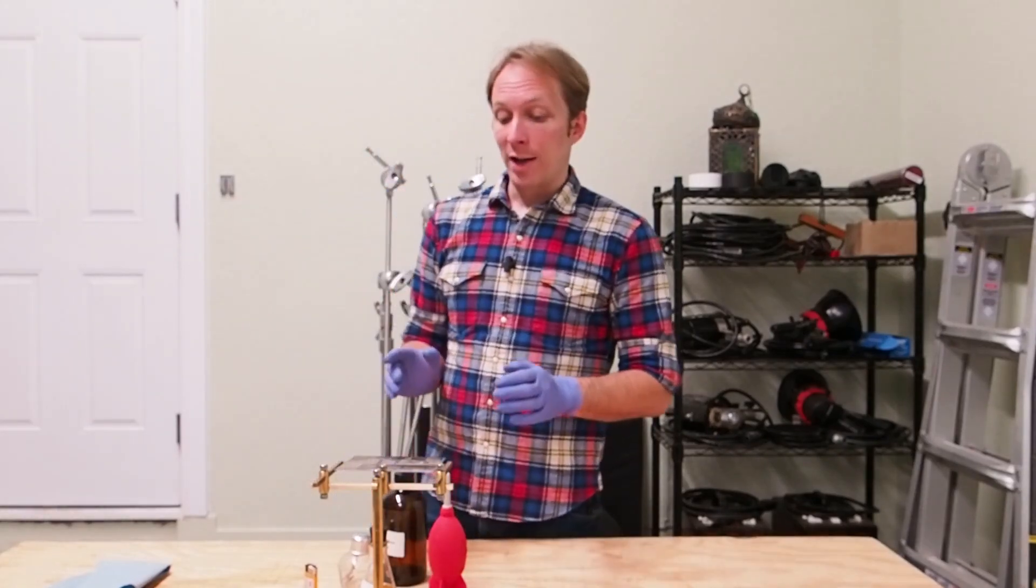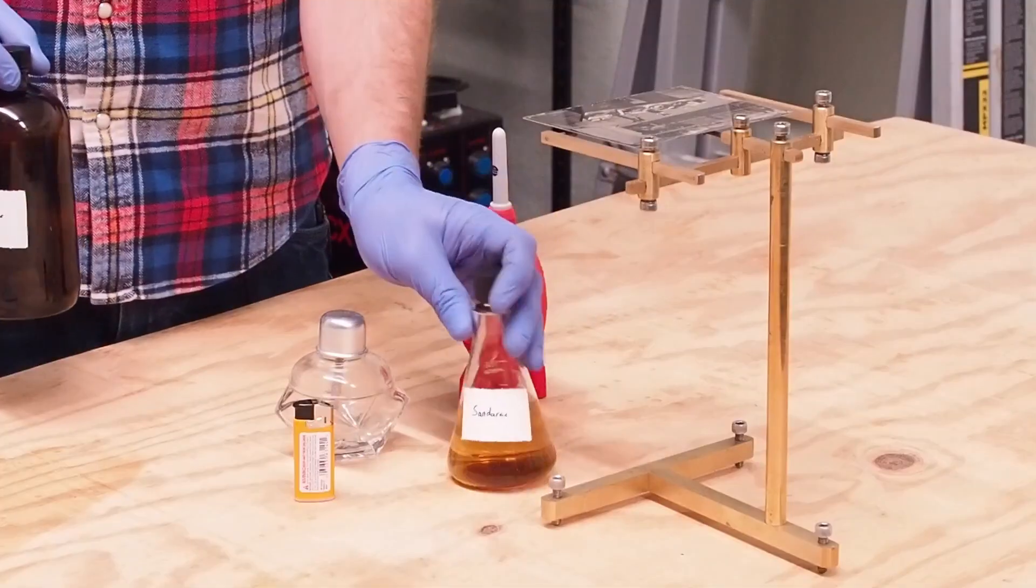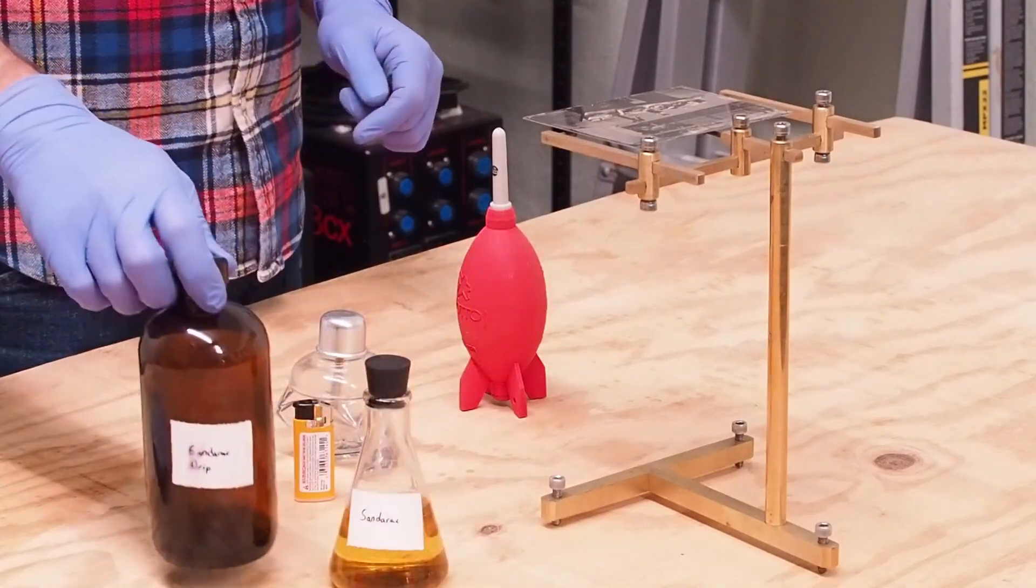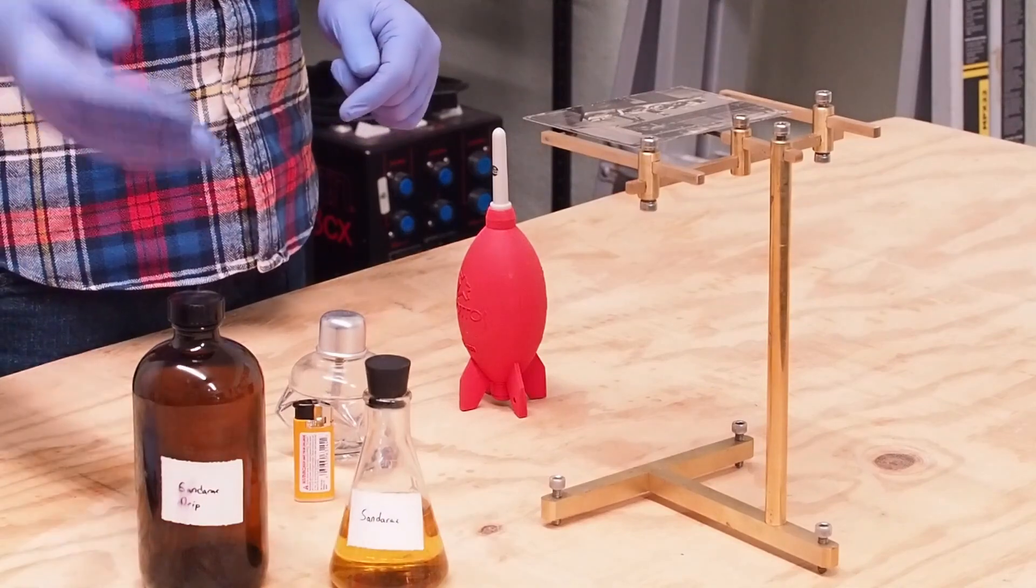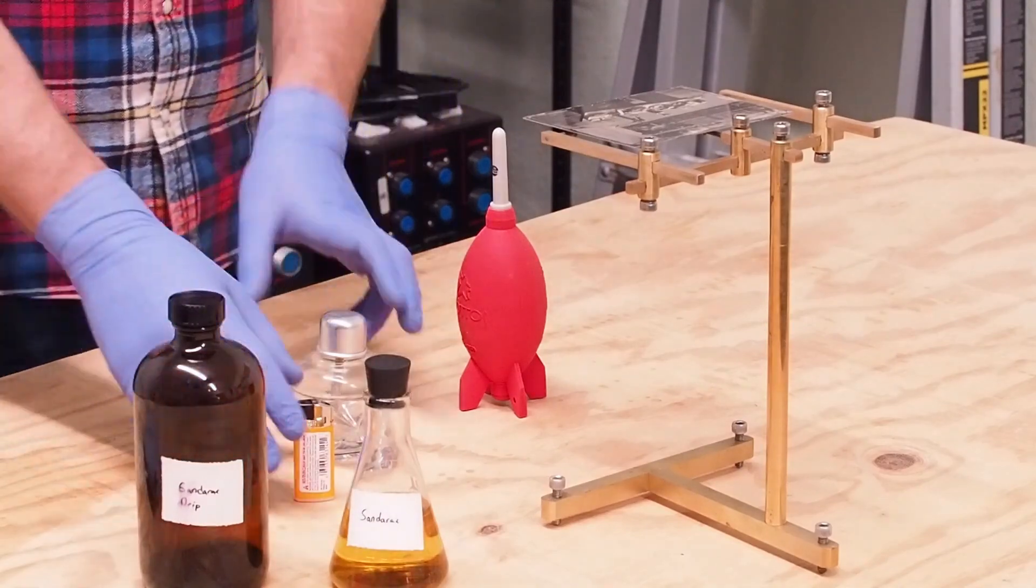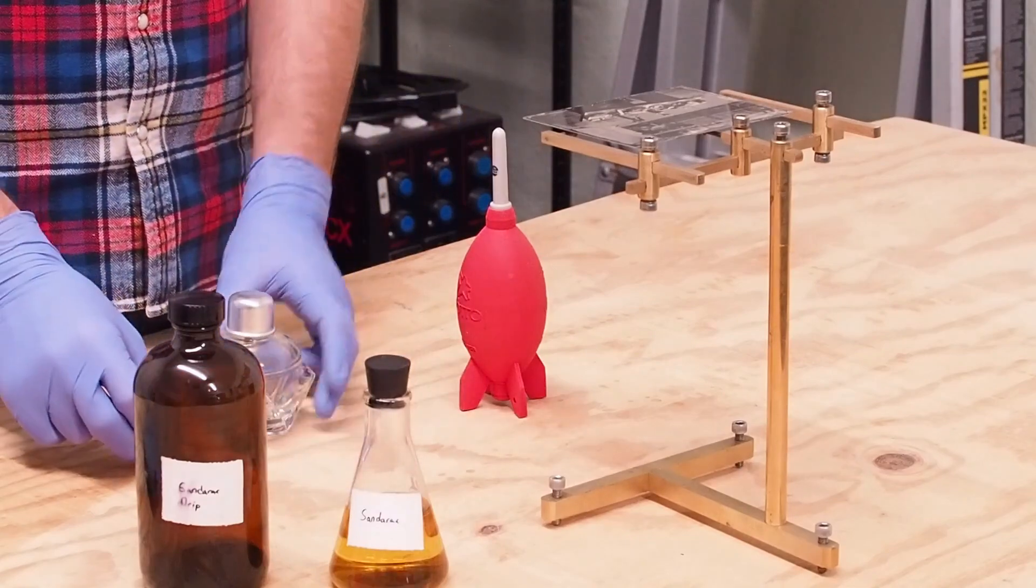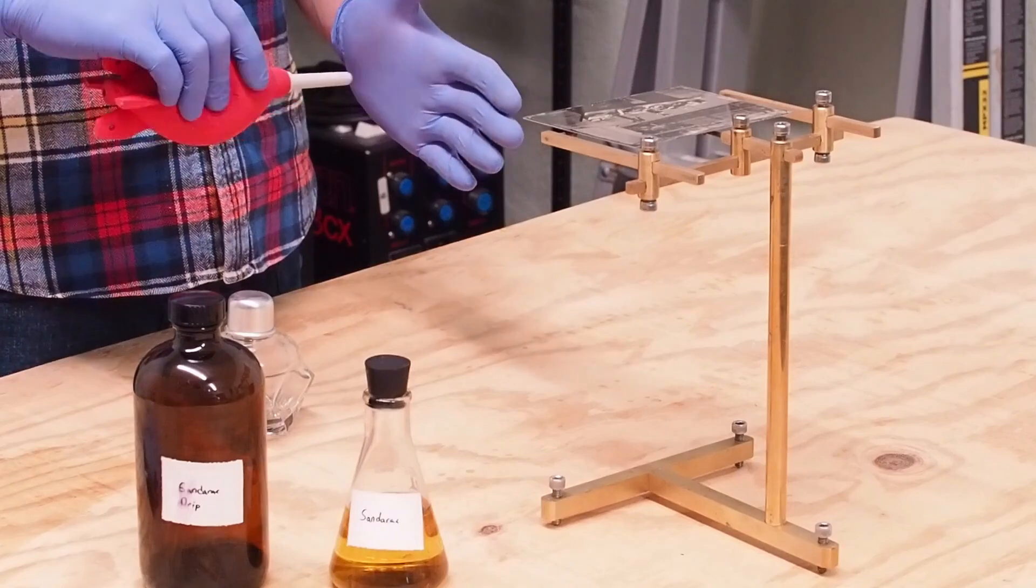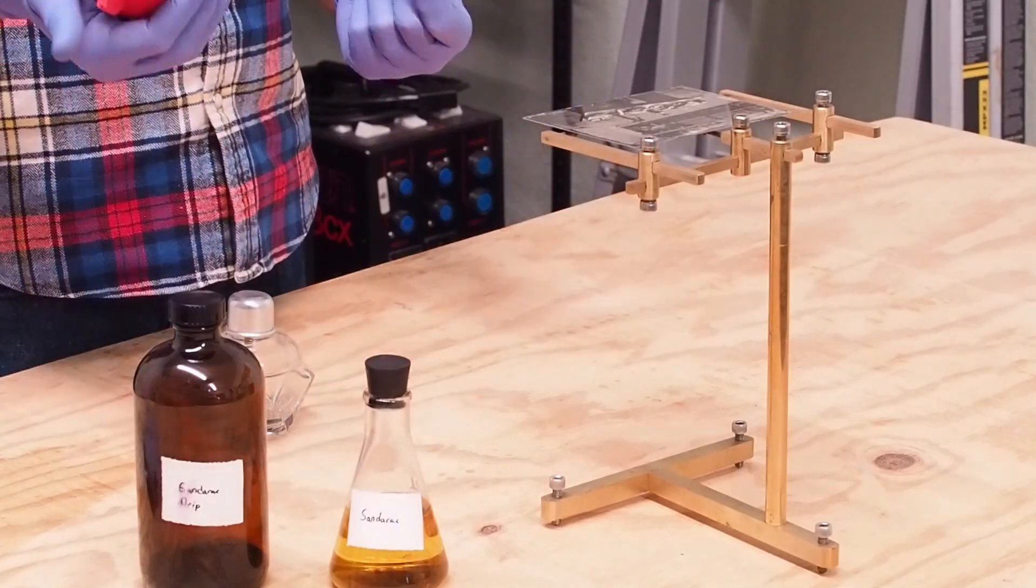Let's take a look at what I've got here. I have the plate obviously, I have my sandarac varnish in an Erlenmeyer flask. I have a separate amber bottle that I'm going to use to pour the excess varnish off into. I have an alcohol lamp and a lighter to light it with. I have a rocket blower. This is a nice little gizmo that you would use typically to clean off, say, the sensor of a digital camera.